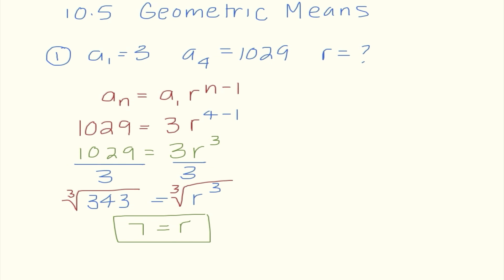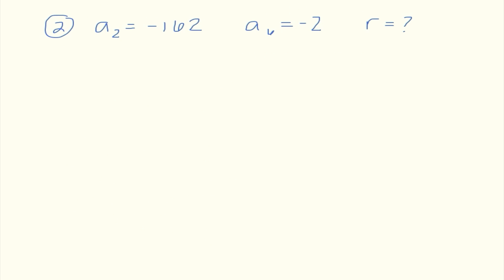If I wanted to check: 3 times 7 is 21, 21 times 7 is 147, and 147 times 7 is 1029. So that confirms the ratio is correct.